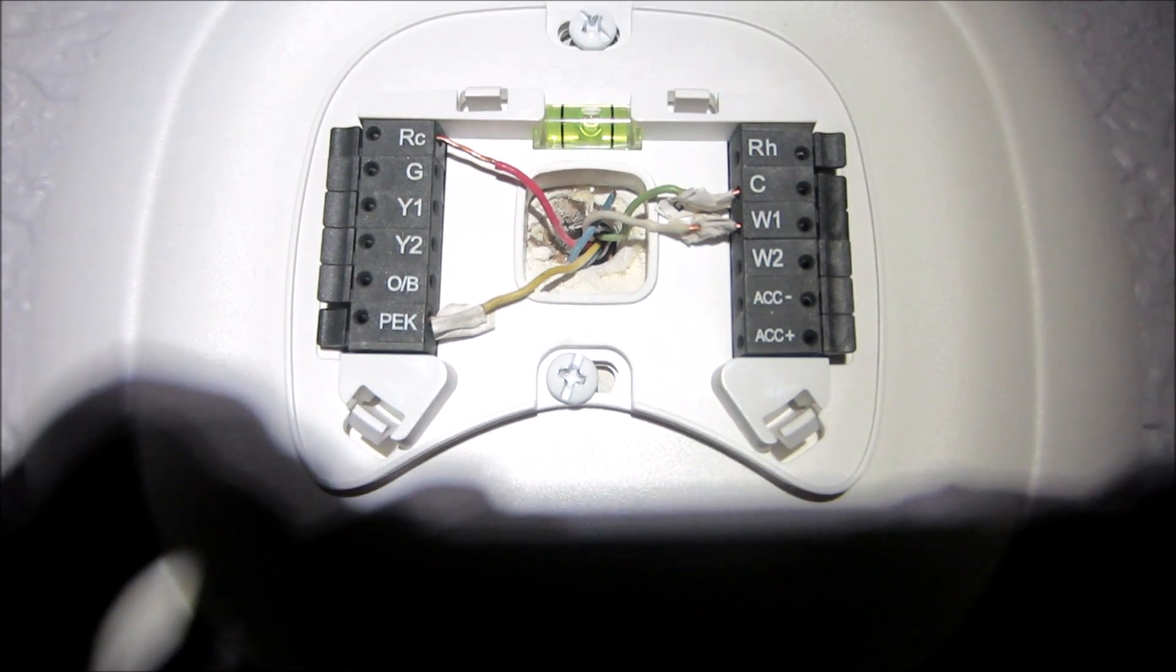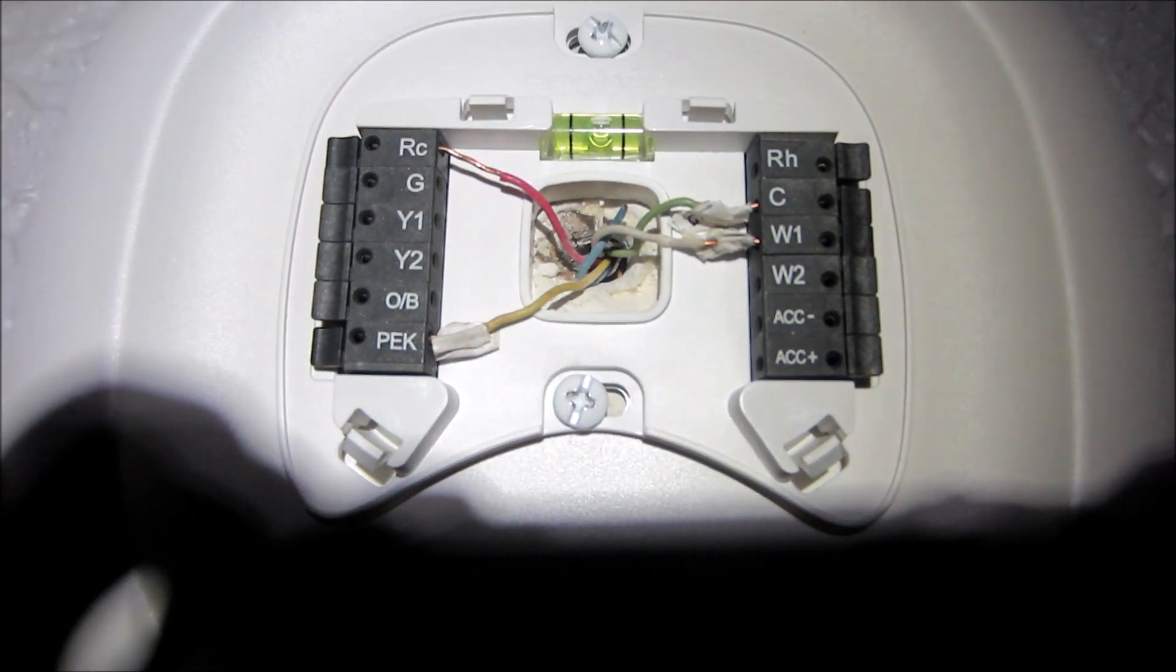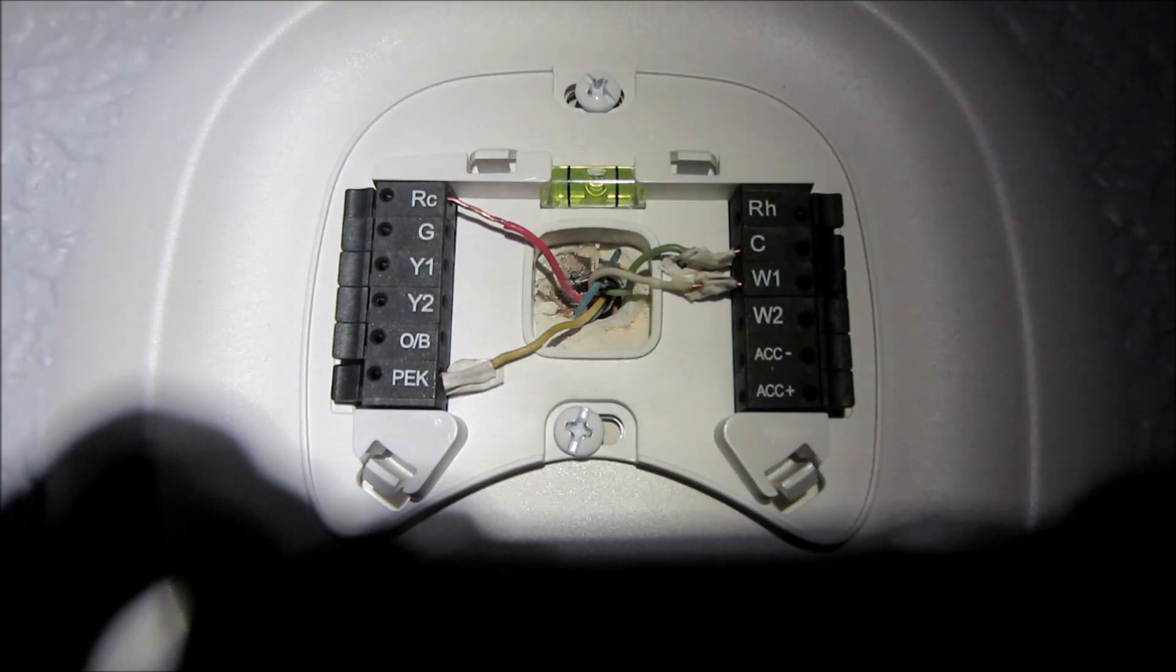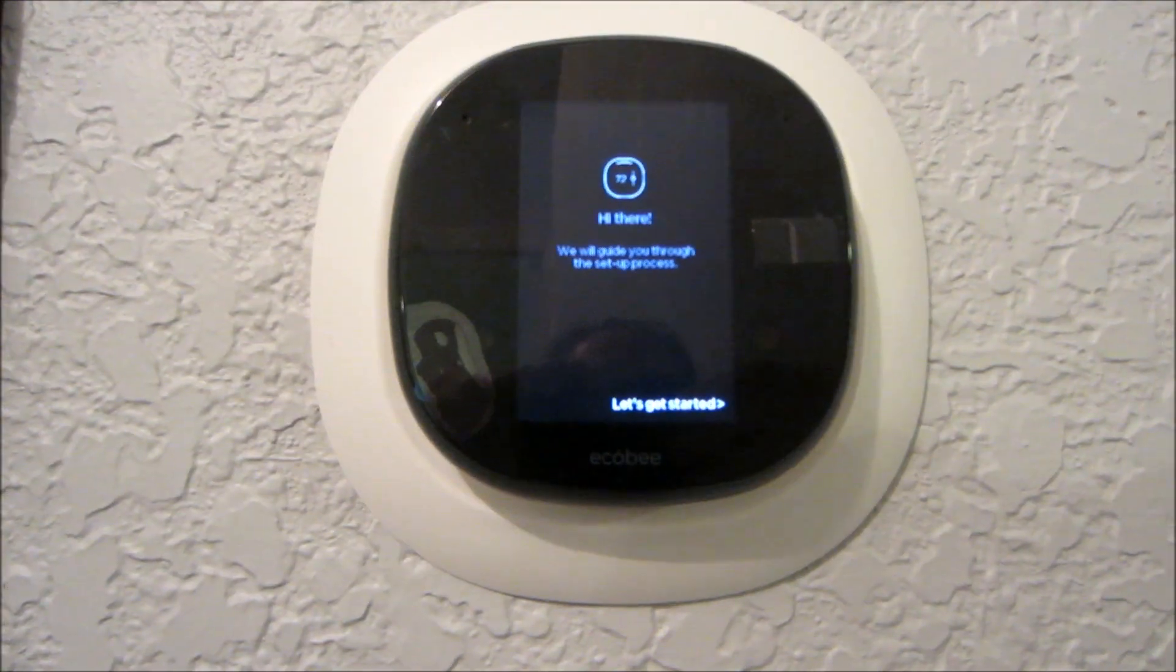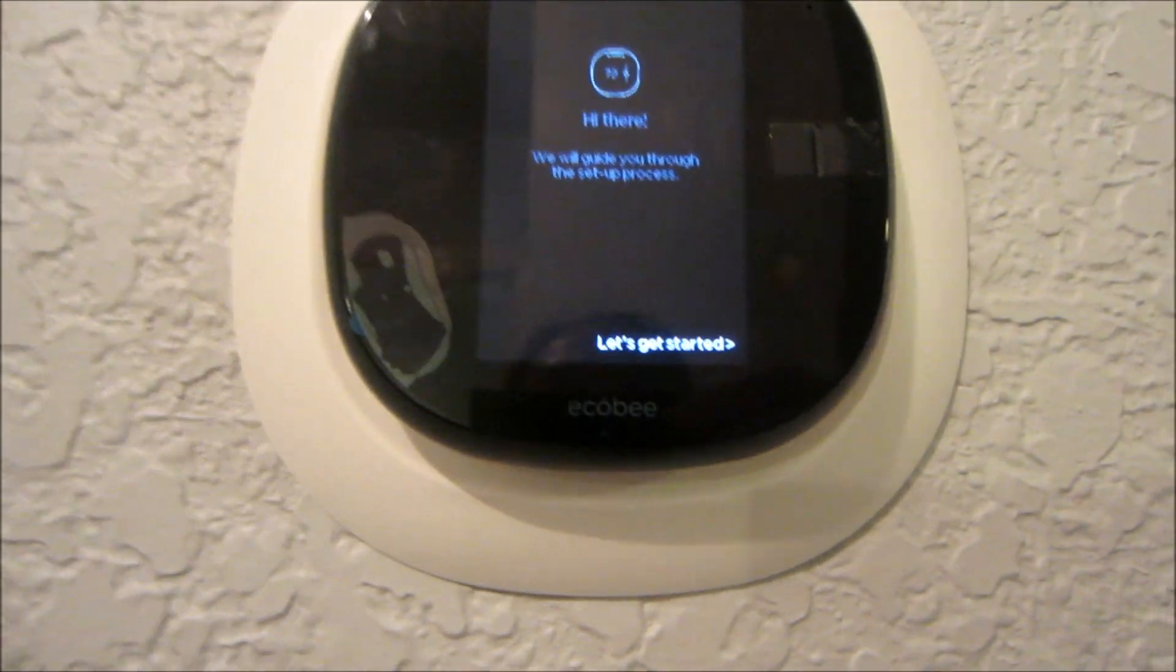So now I'm going to attach the Ecobee and turn on the power. Here's the Ecobee. Here's the back of it. And these prongs need to line up like that. It's relatively simple. You just basically hold it on there and push it in to connect it. And then the next step is to go turn on the power and this should start booting up. Okay, power's on. Let's get started.